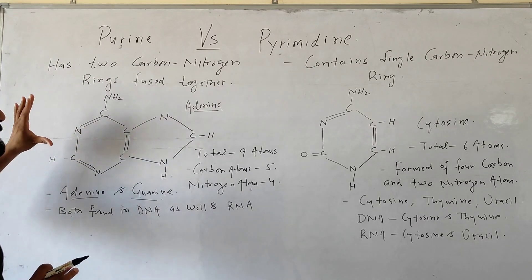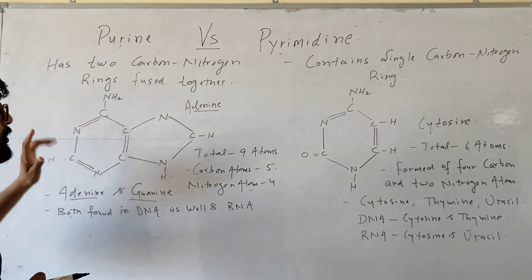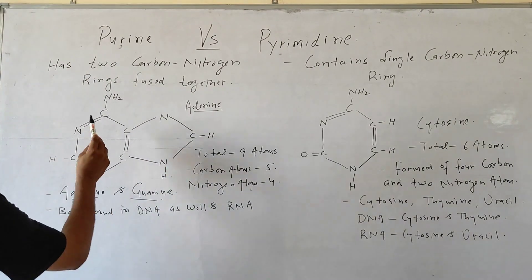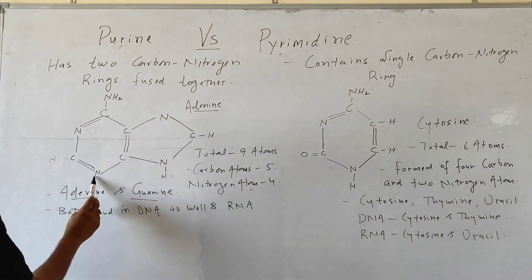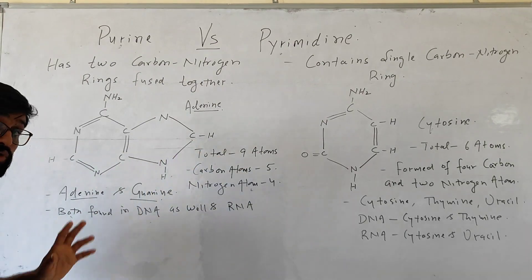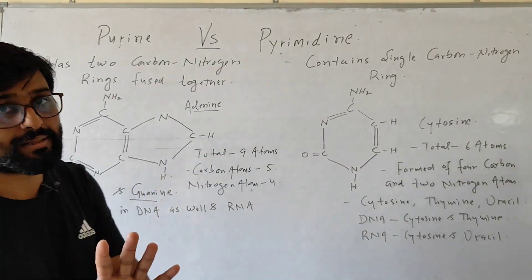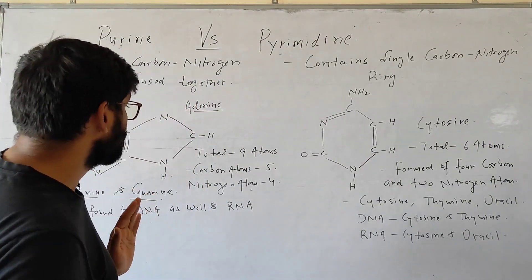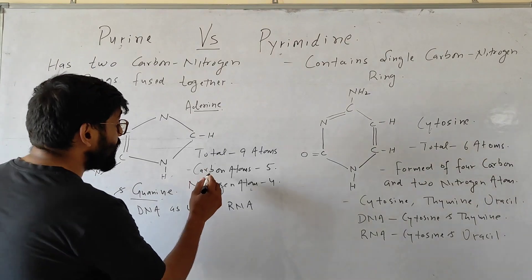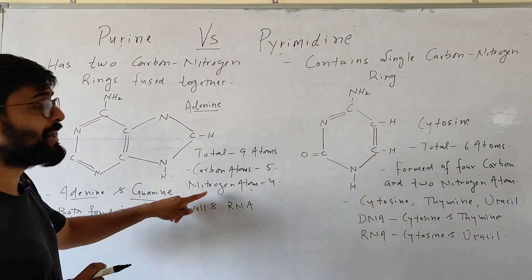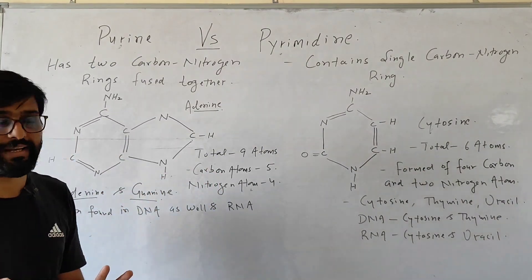In Purine, a total of nine atoms are present — five are carbon atoms and four are nitrogen atoms.